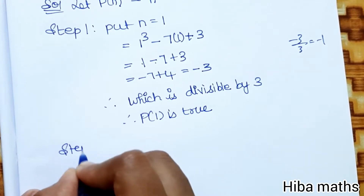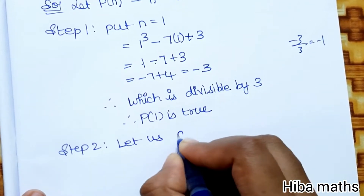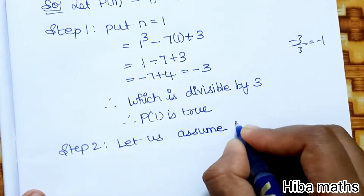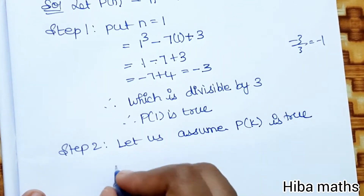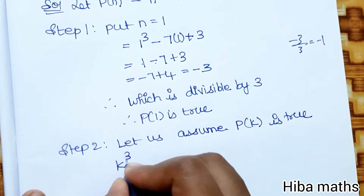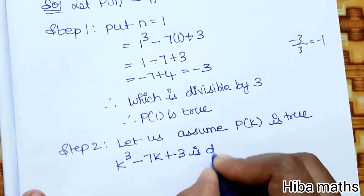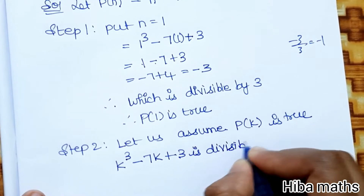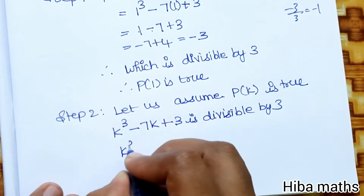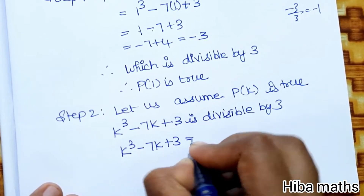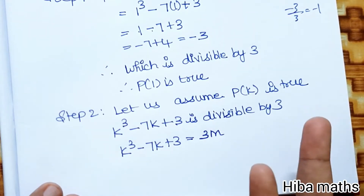Step 2: Let us assume P(k) is true. That means substituting n with k, we get k cubed minus 7k plus 3 is divisible by 3. So we write k cubed minus 7k plus 3 is equal to 3m, for some integer m.